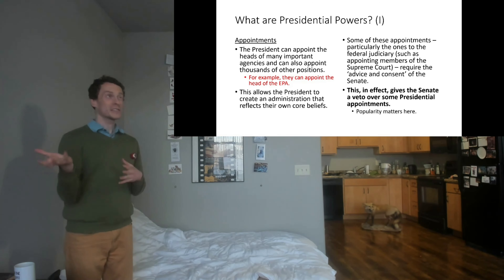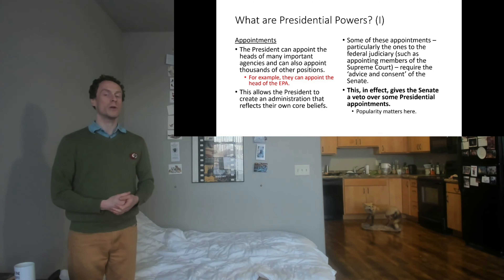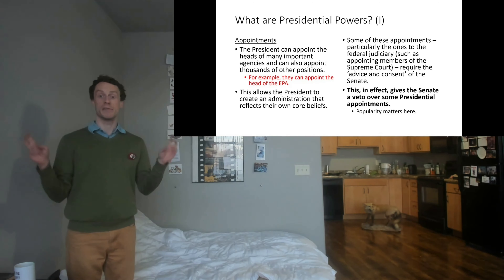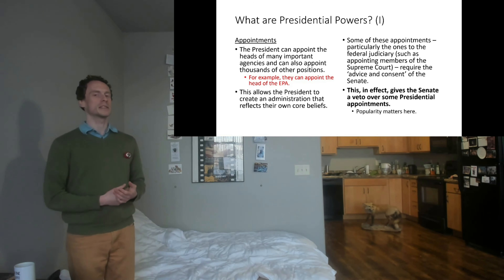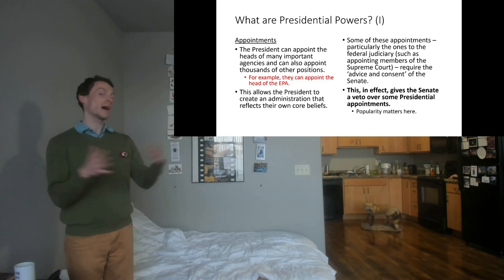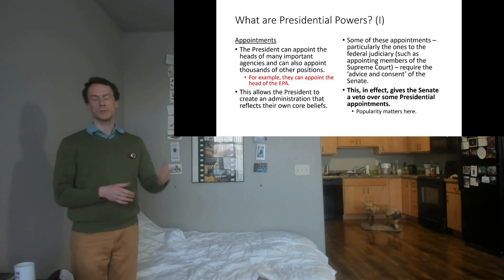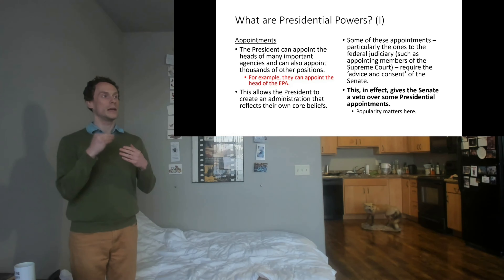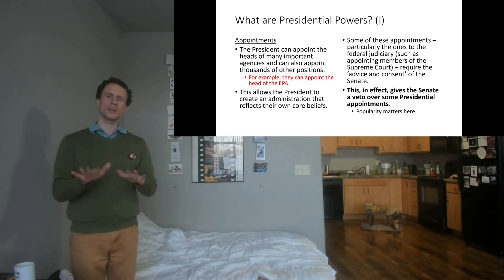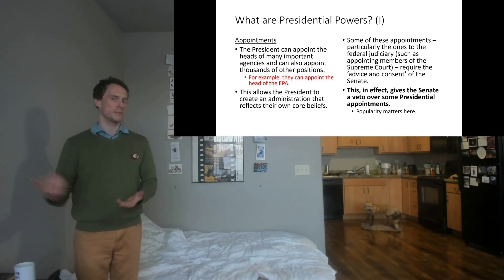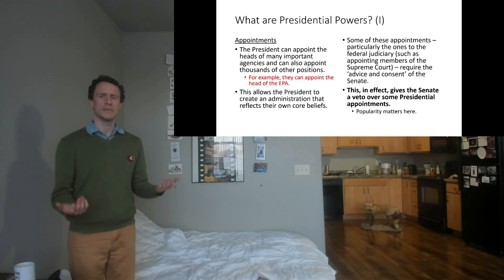The president doesn't have total freedom for some appointments. Most famously, Supreme Court nominees require the advice and consent of the Senate, which essentially gives the Senate a veto. You have to have a two-thirds majority in the Senate in order to get the appointment through, so the president could not appoint someone a vast majority of the Senate would oppose.